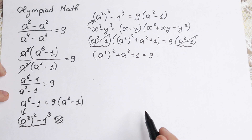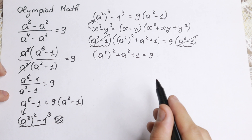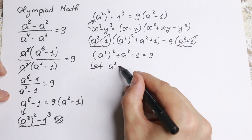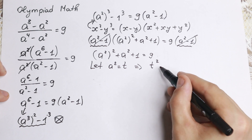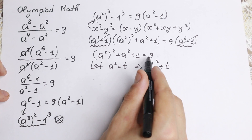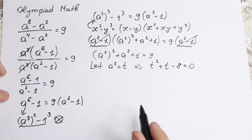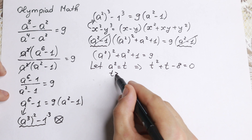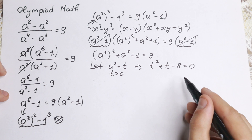What are we going to do next? We can raise to a square power, but we don't need to because right now we can use a substitution. Let a squared equal t. Then our equation becomes t squared plus t, and bringing the 9 to the left-hand side gives us minus 8, so t squared plus t minus 8 equals 0. One really important moment: t must be positive, because t equals a squared, so we reject any negative roots.